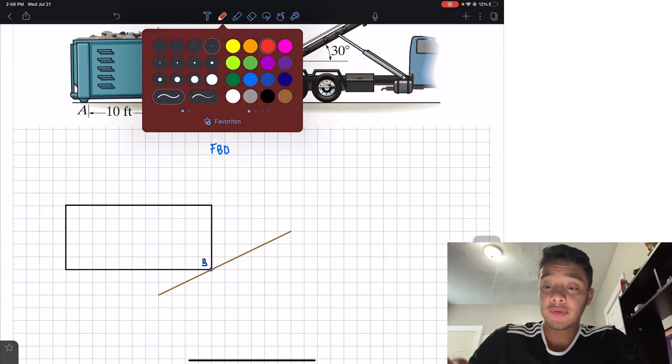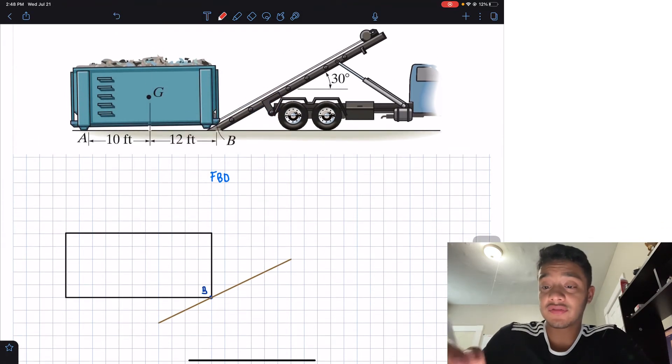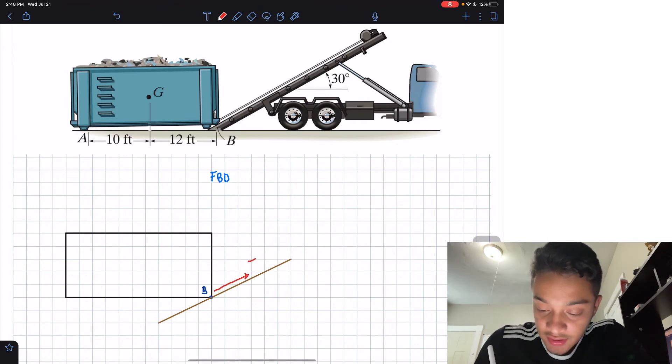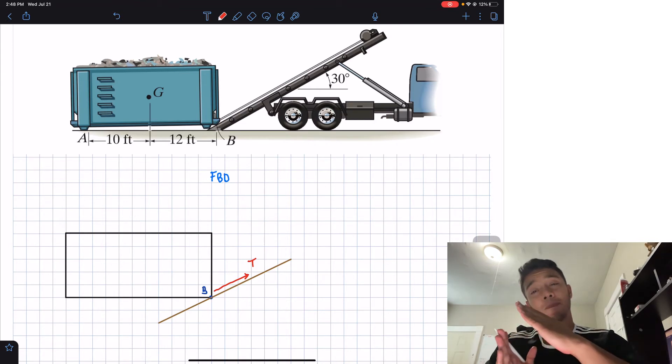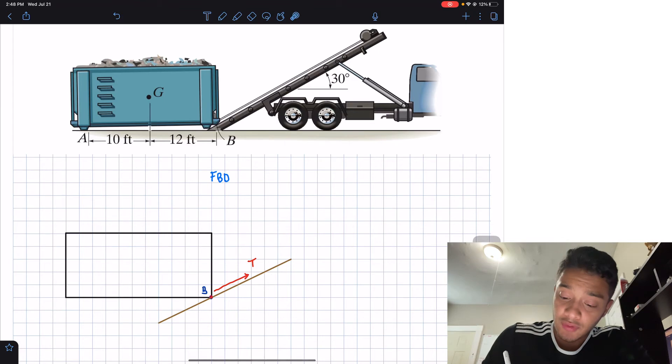Now as I stated before, we have the tension of this cable. So this cable is trying to pull this beam up, therefore we're going to have the force going up. This is my tension T.